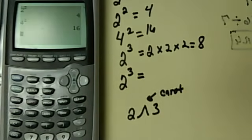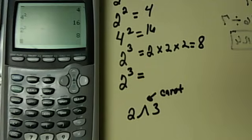So we have that same symbol on our calculator right here on top of the division button. So if I want to put in 2 to the third, I have to hit 2, then the caret symbol, then 3, and then hit enter and then I'll get 8.